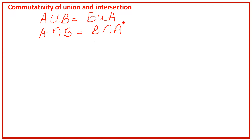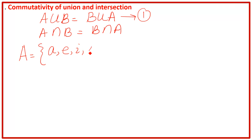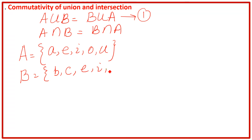We will prove A union B equals B union A first, and then we will prove the second one. Suppose set A contains the elements A, E, I, O, U — these are the vowels — and set B contains B, C, E, I, and F. You can write down any elements in order to prove commutativity of union and intersection, but you should know the concept: what is the meaning of union and what is the meaning of intersection.